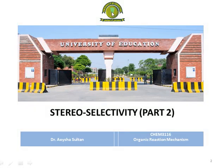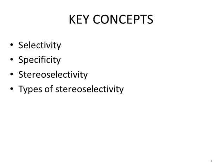Assalamu alaykum dear students, I hope you all are fine and in the best conditions of your health. In today's lecture for the course of Organic Reaction Mechanism, we shall study about the concept of stereoselectivity. This is Part 2 of stereoselectivity. In the previous lecture, we studied about selectivity, specificity, prochirality, homochirality, enantioselectivity, enantiotopic, diastereotopic, and the Re and Si faces of the carbonyl system and the imine system.